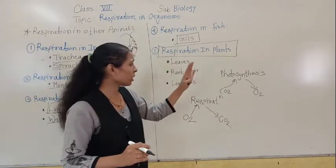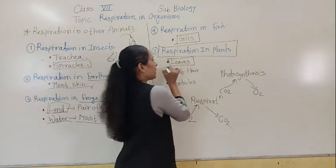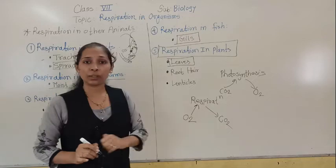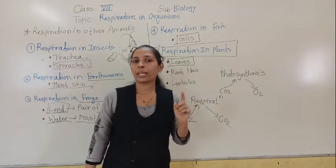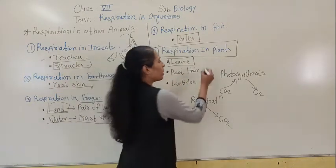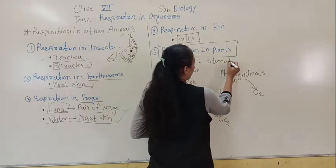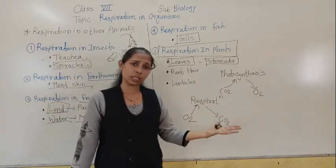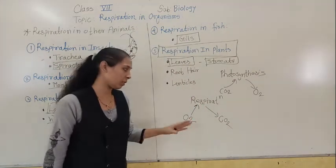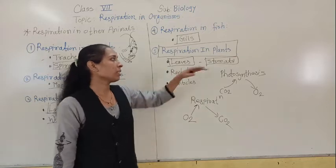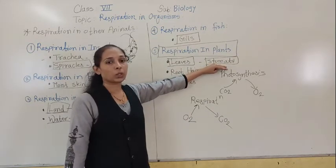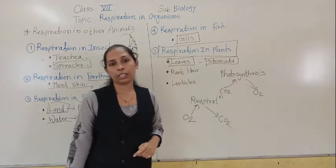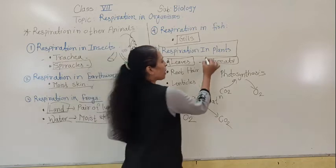From our previous lesson on nutrition in plants, we discussed that plant leaves have tiny pores called stomata. The exchange of gases — for both photosynthesis and respiration — takes place through the stomata. So the exchange of gases in plants occurs through the tiny openings present on the leaves, which are called stomata.